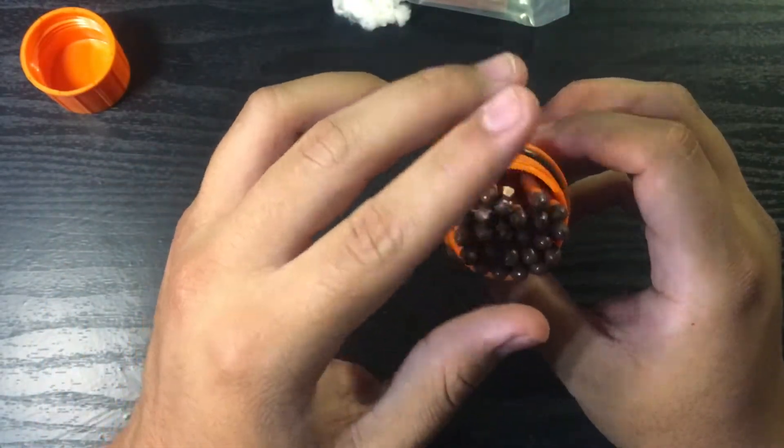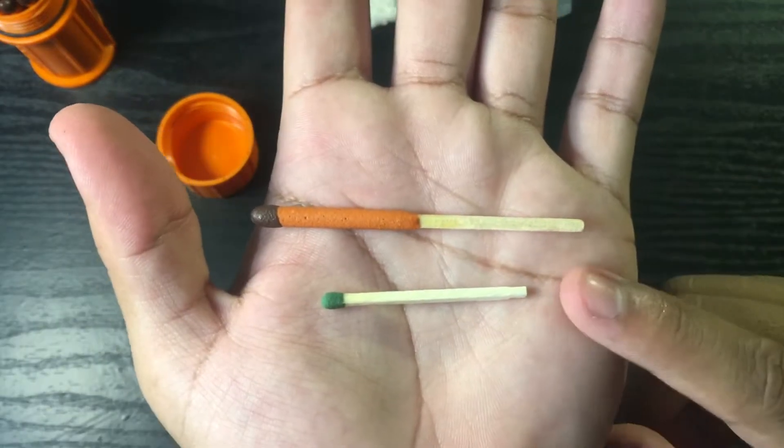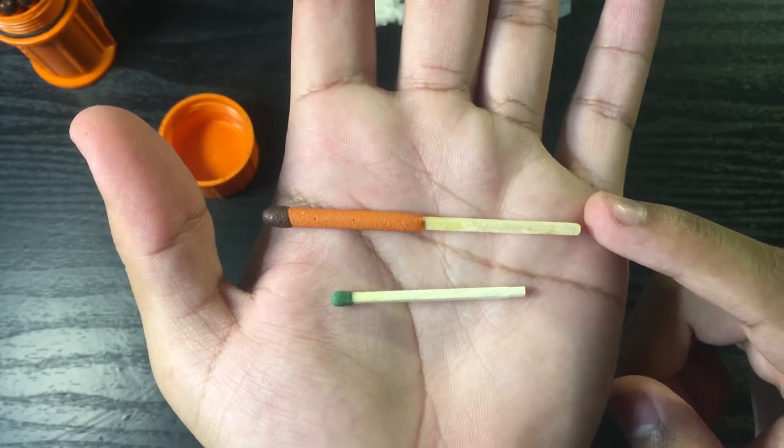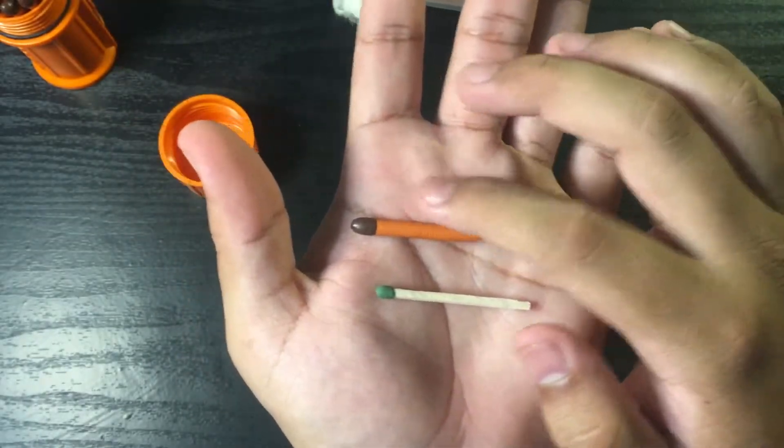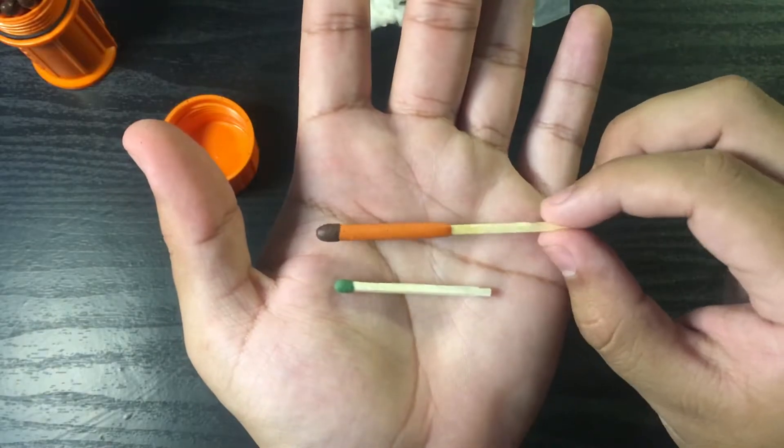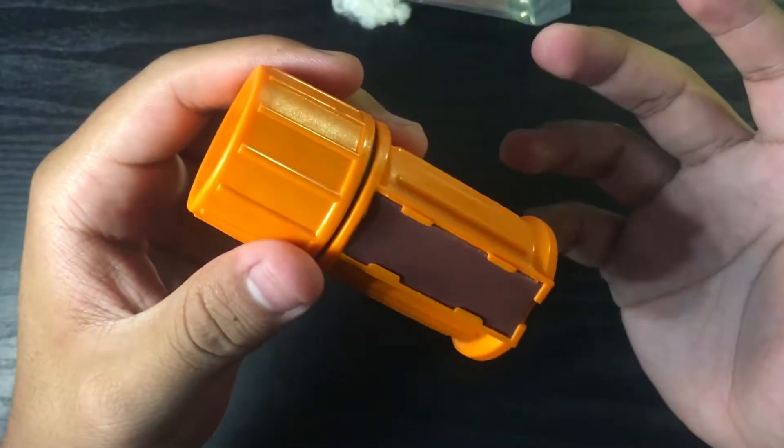These are the actual matches. For comparison, this is just a regular match and then these are the waterproof and windproof matches right here. Significantly bigger, and I'm guessing that this little strip right here, this little brown part, is just so it can burn even harder. All right, now let's go test these things out for ourselves.